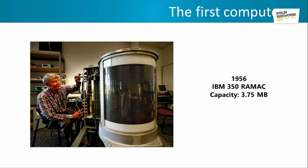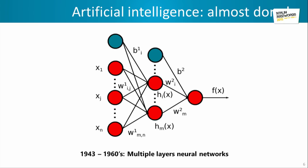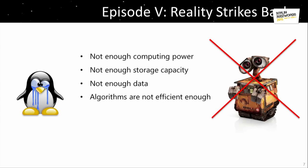So people thought, we've got artificial intelligence solved, we're almost done. People invented neural networks, and people thought, OK, we're going to build intelligent systems, more clever than men, and things are going to be quite easy. In the end, it didn't work that well.